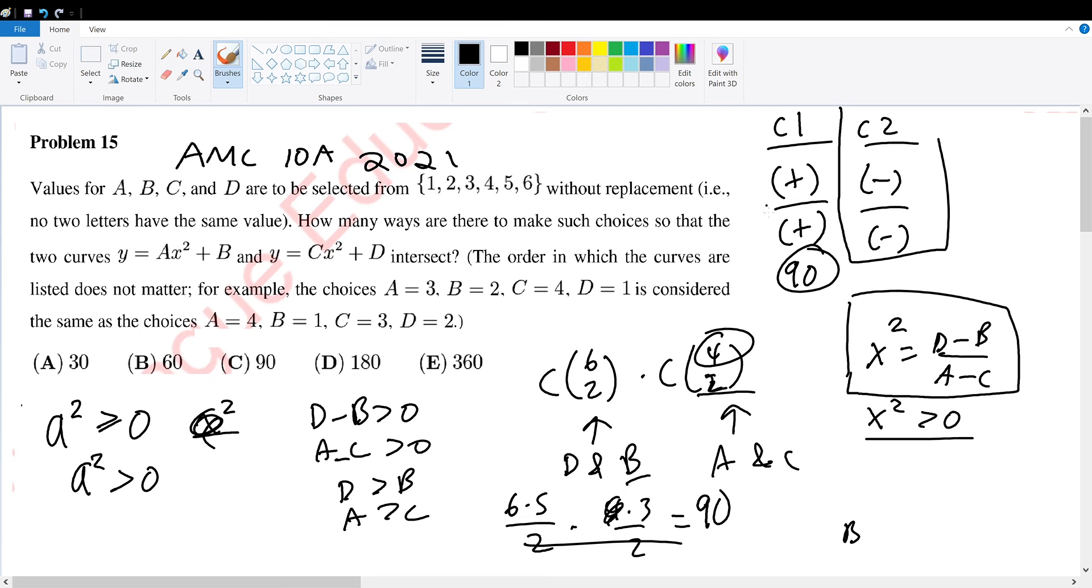Now, case two is negative and negative. Now, since negative and negative can be explained by the same logic as how we did it for case one, case two will also have 90 possibilities. So we can sum them up and get 180. But that is wrong. Why is it wrong?